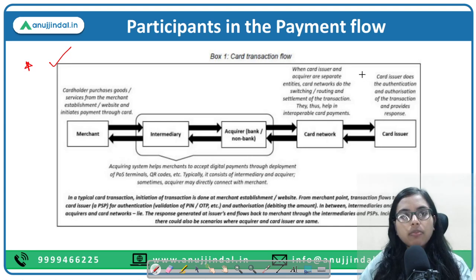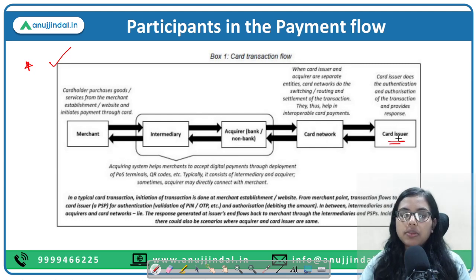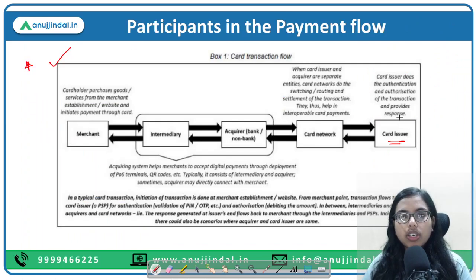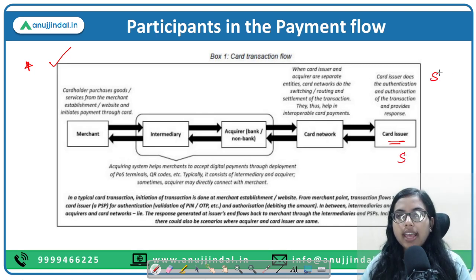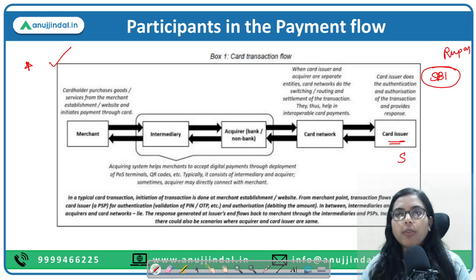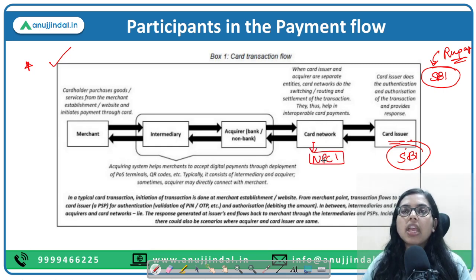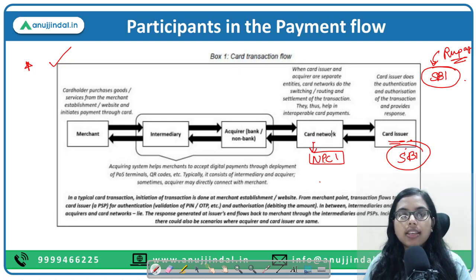Let's understand this using an RBI figure. The card issuer company is what we called the payment instrument issuer. For example, if I have an SBI debit card with RuPay on it — SBI is the card issuer bank. The card network is NPCI since it's RuPay. If I had a Mastercard or Maestro, then Mastercard or Maestro would be the card network.